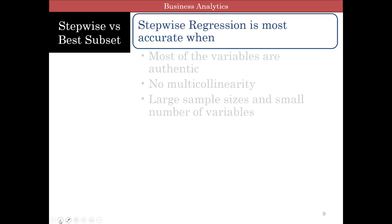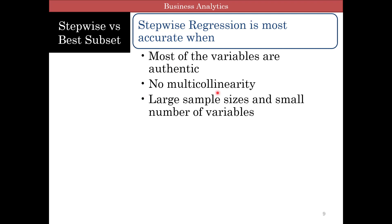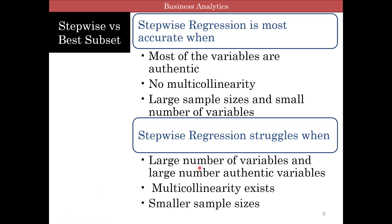And stepwise is most accurate when most of the variables are authentic. There is no multi-collinearity. Large sample sizes with small number of independent variables. So you really need larger huge sample sizes and smaller number of variables. Now stepwise regression struggles when you have small sample size, multi-collinearity, and then you have a large number of variables, especially if you have a large number of authentic variables. And stepwise regression struggles there and that's where best subset regression would actually be better.